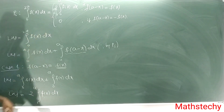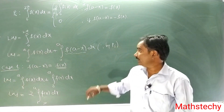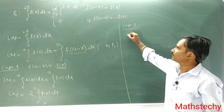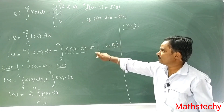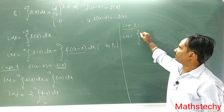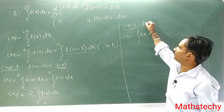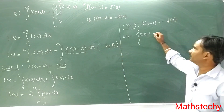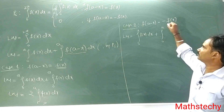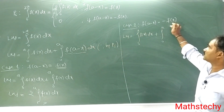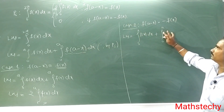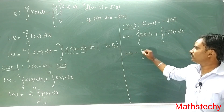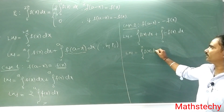So that proves Case 1. Okay, Case 2. Let's take that same — consider the left hand side is equal to 0 to a f of x. Case 2: f of a minus x equals minus f of x. So this is the way: dx plus 0 to a f of a minus x which is minus f of x. So left hand side is equal to 0 to a f of x dx plus into minus.